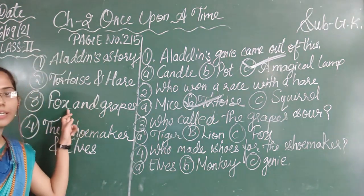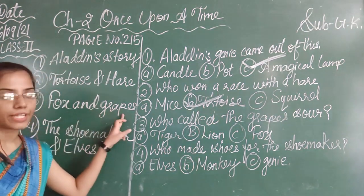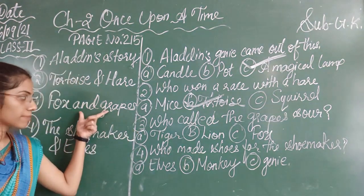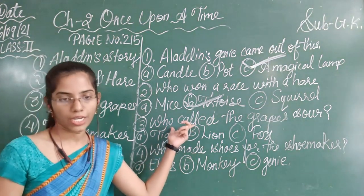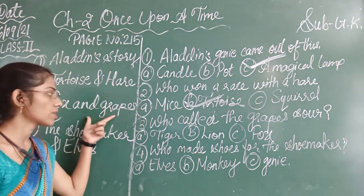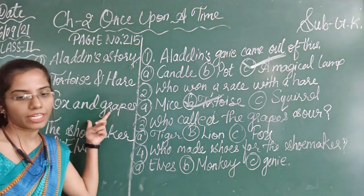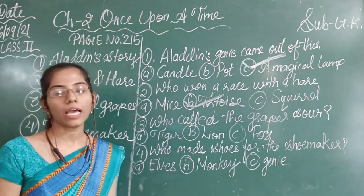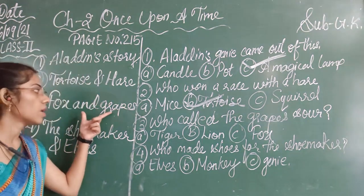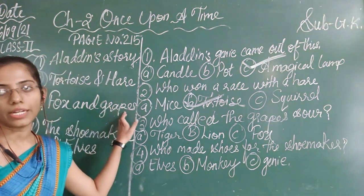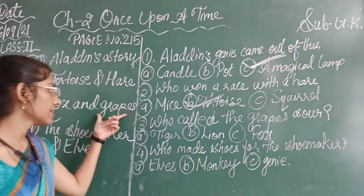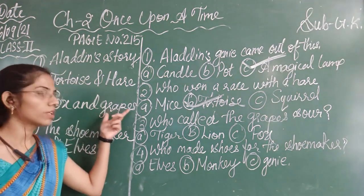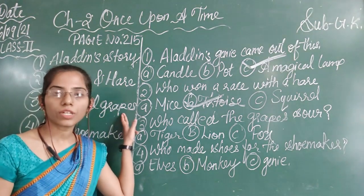The third story is related with the fox and the grapes. A question is also given related to this. The message this story conveys is that it's easy to despise what you cannot have — meaning we can always find faults in things we are unable to get. Let's recall the story of the fox and the grapes.